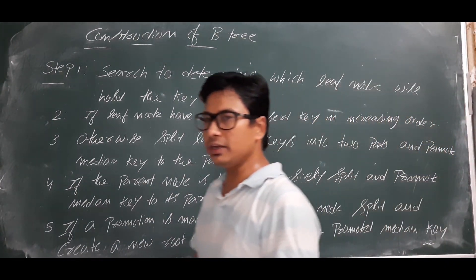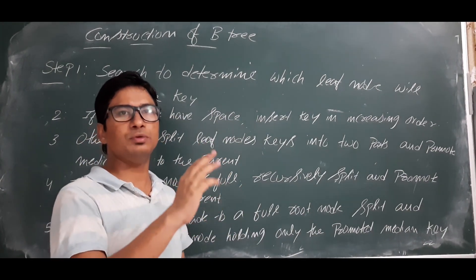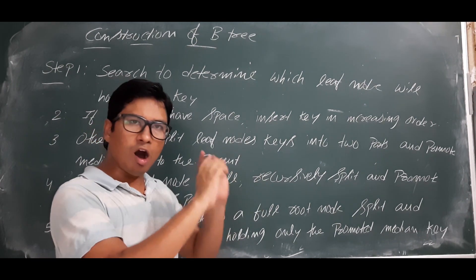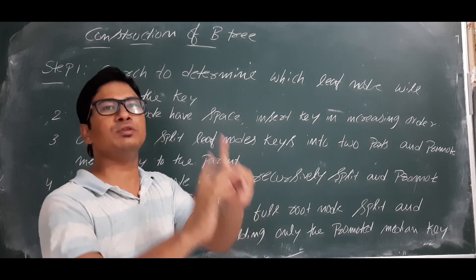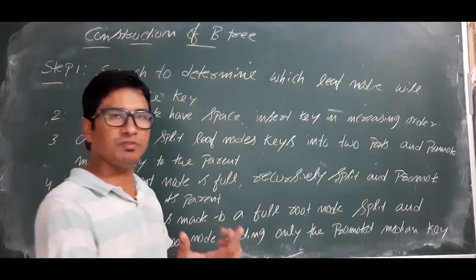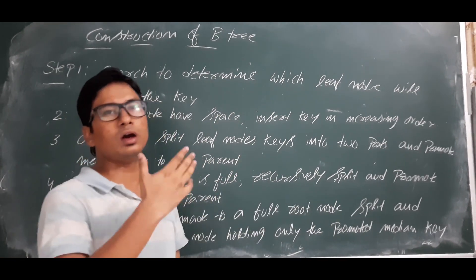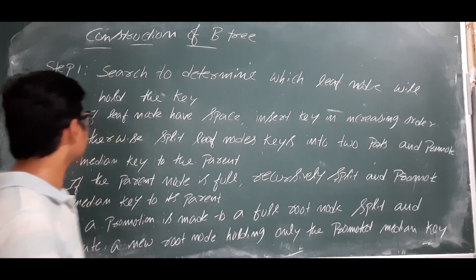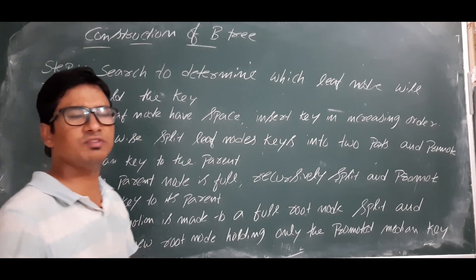All the elements in the leaf - suppose if you have 6, 5, 2, if you want to keep in leaf node they should always be in increasing order like 2, 5, 6. So all the elements in the leaf node should be in ascending order, whether it is a leaf node, root node, or internal node. It should always be in increasing order.